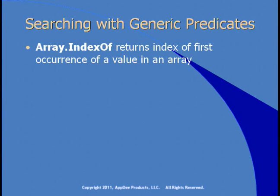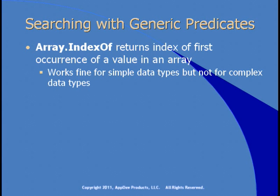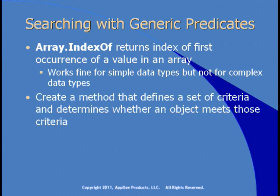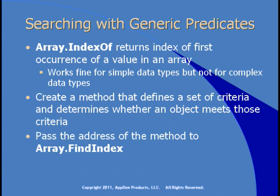Generics also help when you're searching within an array. The indexOf method of the array class returns the index of the first occurrence of a value in an array. So if you have an array of five strings, you can call array.indexOf, pass in one of the strings, and it'll tell you the first time it finds that string. This works fine for simple data types, but it doesn't work well for complex data types — the indexOf method needs to know what it's looking for. To work around this, you can create a method that defines the criteria you want the indexOf method to use, and then pass the address of that method to the findIndex method of the array class.